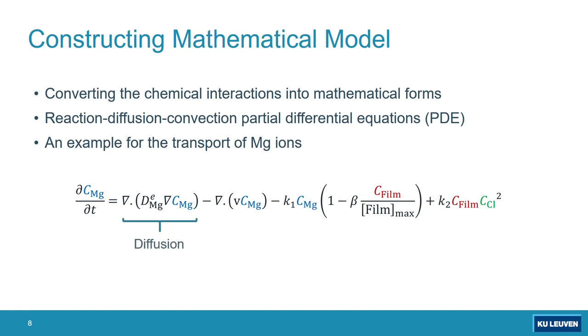An example for magnesium ions can be like this. This is an equation that we have for each component. This equation simply describes the way that magnesium ions diffuse through their surrounding environment and the way that they are convected by fluid flow if we have a perfusion setup, and the way that they react with other components.